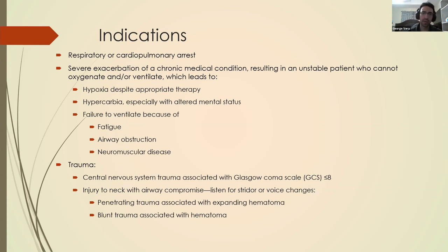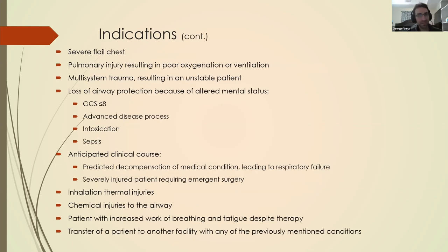Trauma is certainly another reason for endotracheal intubation, specifically in cases of a Glasgow Coma Scale of less than or equal to eight, any type of injury or airway compromise to the neck. Any of these things are causes for wanting to intubate the patient to secure that airway. Further indications include flail chest, any pulmonary injury resulting in poor oxygenation or ventilation, and multi-system trauma — say a car accident with multiple injuries to various organ systems including respiratory, cardiovascular, endocrine, or GI.